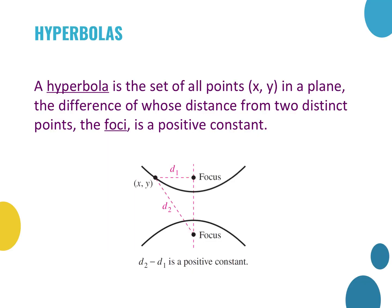Hyperbolas are basically two parabolas. There's a definition, but basically it's two parabolas that go in opposite directions. This would be a vertical hyperbola because the parabolas go up and down. You also have horizontal hyperbolas where they go from left to right. These are going to have different parts, which we're going to talk about in the next slide.